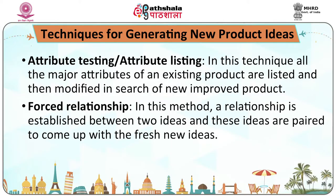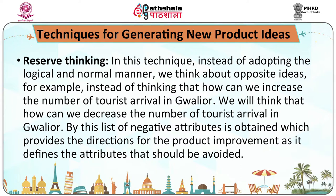There are several techniques for generating new product ideas. Attribute listing: all major attributes of existing products are listed and then modified in search of a new improved product. Forced relationship: a relationship is established between two ideas and these ideas are paired to come up with fresh new ideas. Reverse thinking: instead of adopting the logical and normal manner, we think about opposite ideas — for example, instead of thinking how to increase tourist arrivals, we think how to decrease them, obtaining a list of negative attributes which provide directions for product improvement.